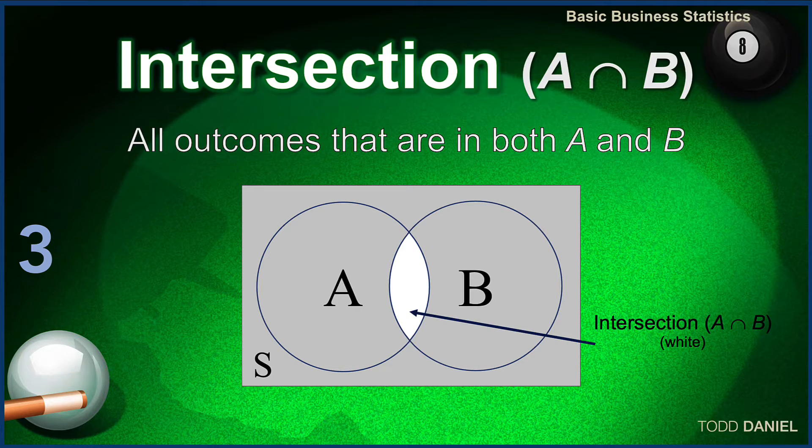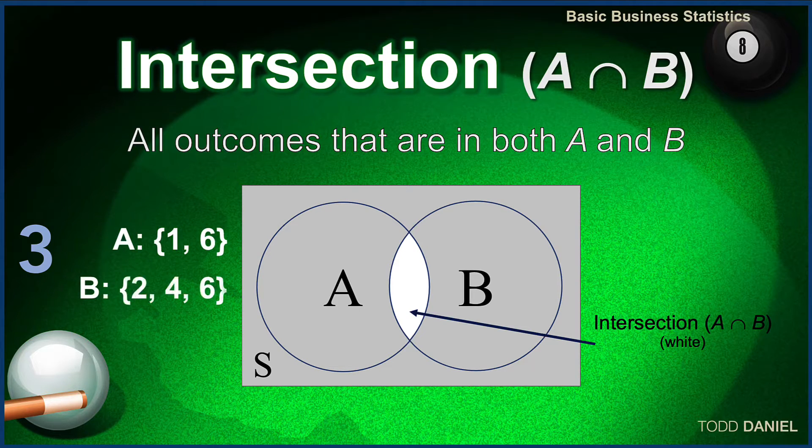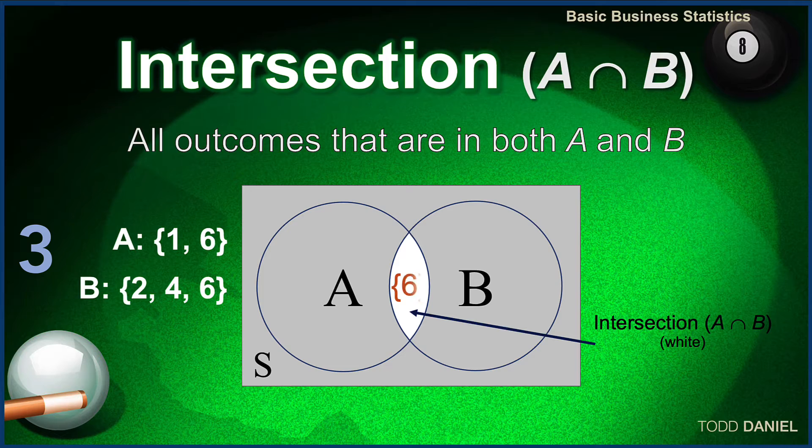Event A is rolling a 1 or a 6. Event B is rolling an even number, 2, 4, or 6. What is the intersection of these two events? What are outcomes that are in both? And as we can see, there is only one outcome that is common to both of these events, and that is the value of 6. 6 is the intersection of A and B.